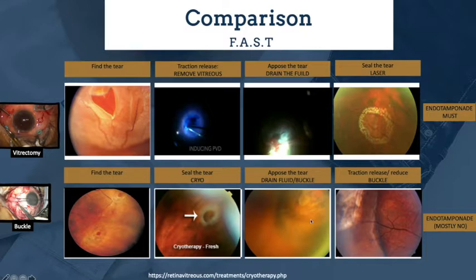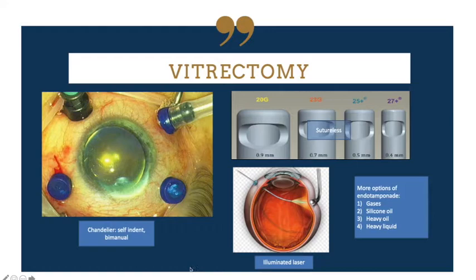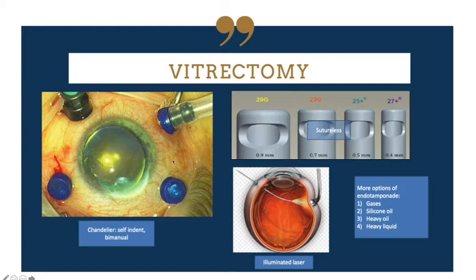To release traction in buckle surgery, we do not completely remove the traction — we reduce the amount of traction to allow the retinal tear to sit on the buckle. Turning to vitrectomy advances: apart from three-port vitrectomy, we can now do four-port vitrectomy. The chandelier reduces light toxicity, allows the surgeon to become more independent using both hands, enables self-indentation, and allows work without an assistant. We also have the illuminated laser for independence and simultaneous indentation.